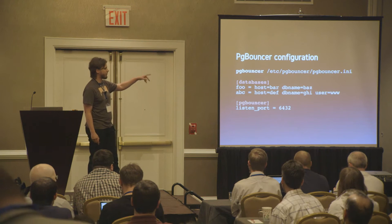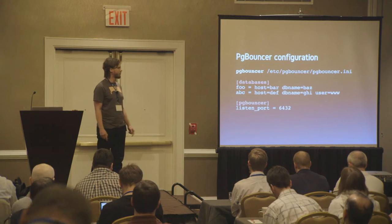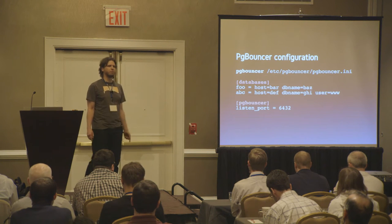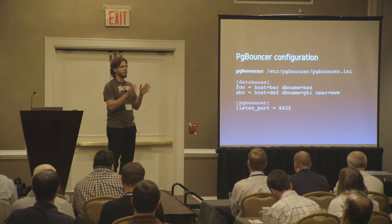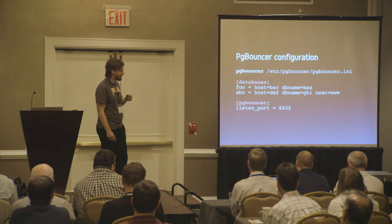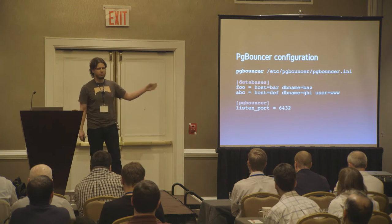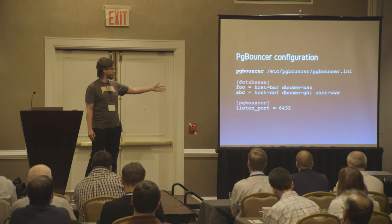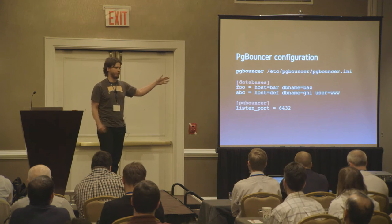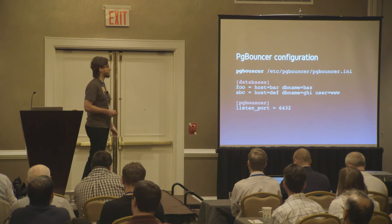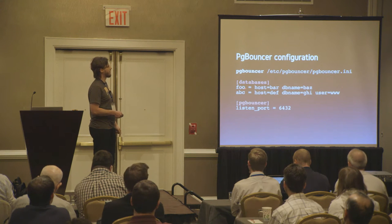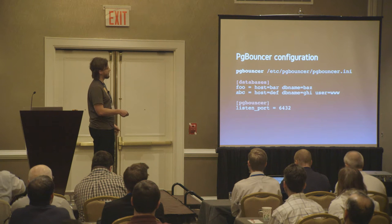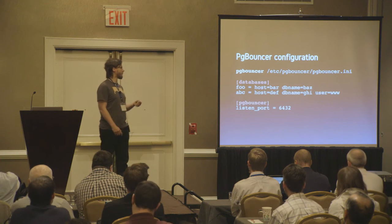PgBouncer is started as a command — you give it a configuration file, which is often at a standard location but can go wherever you want. I find it useful when I log into a box to look at the process list and see what the configuration file is. The configuration file has an .ini format, with brackets and sections. The main sections are the database section and the PgBouncer section. The database section determines where your downstream connection is going — if you connect to database 'foo', PgBouncer sends that to the configured location, which is a Postgres connection string. If you connect to a database not listed, it gives an error that the database doesn't exist.